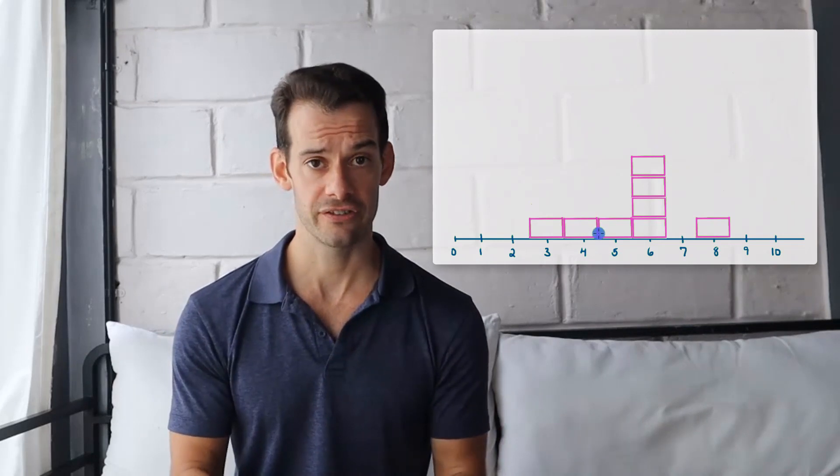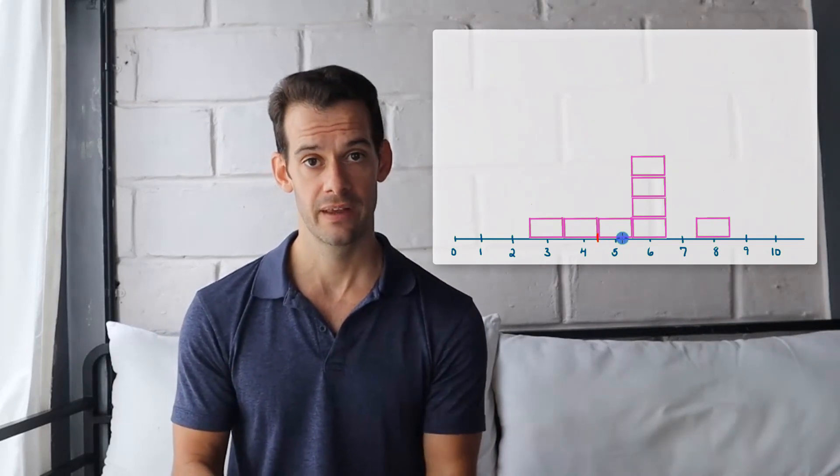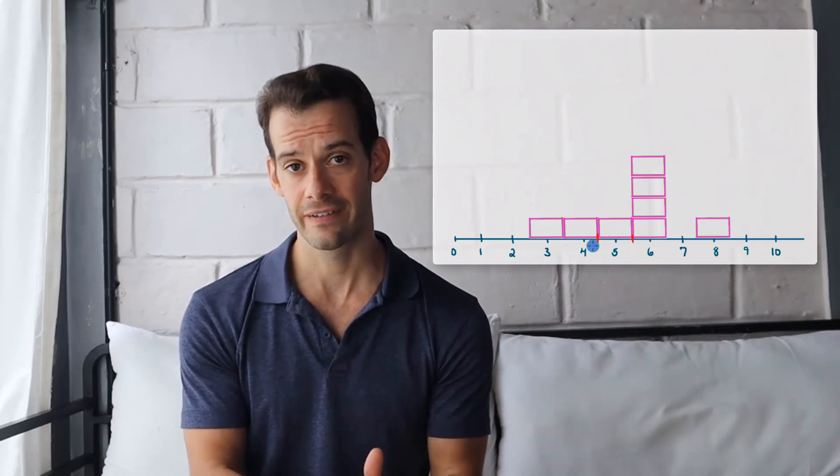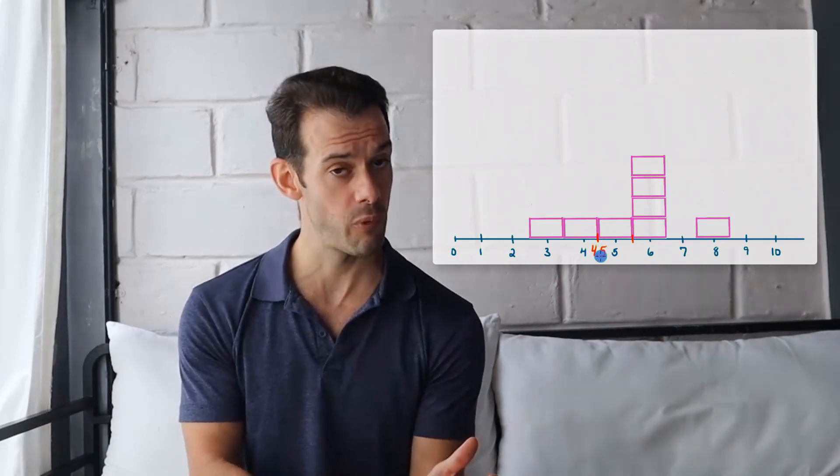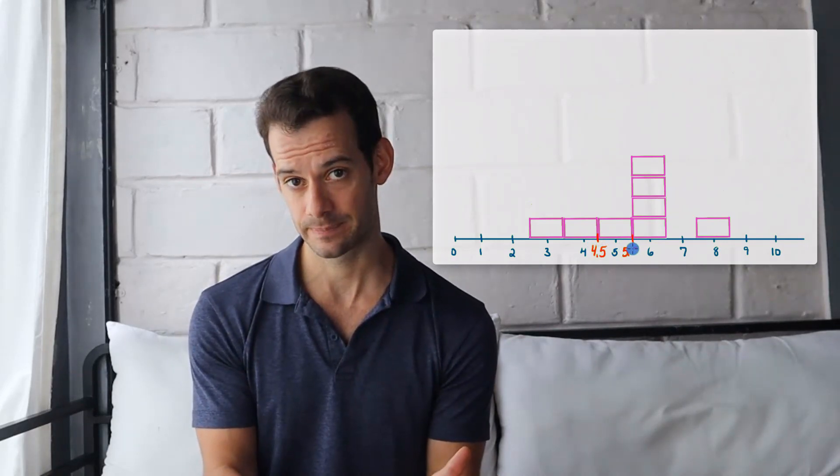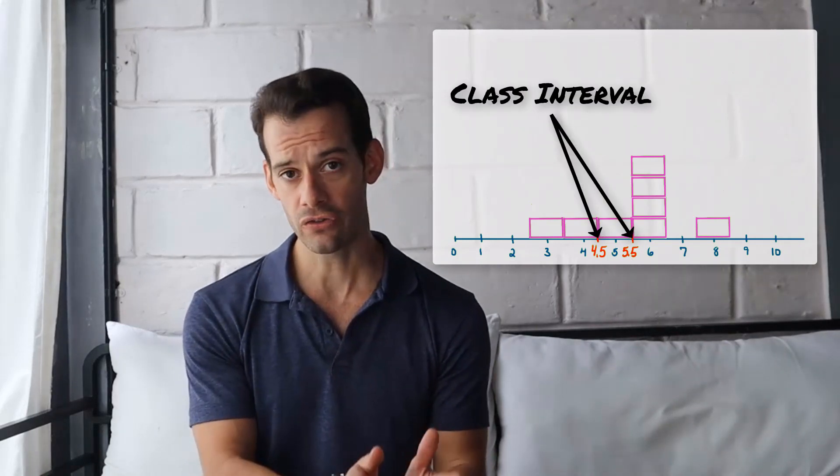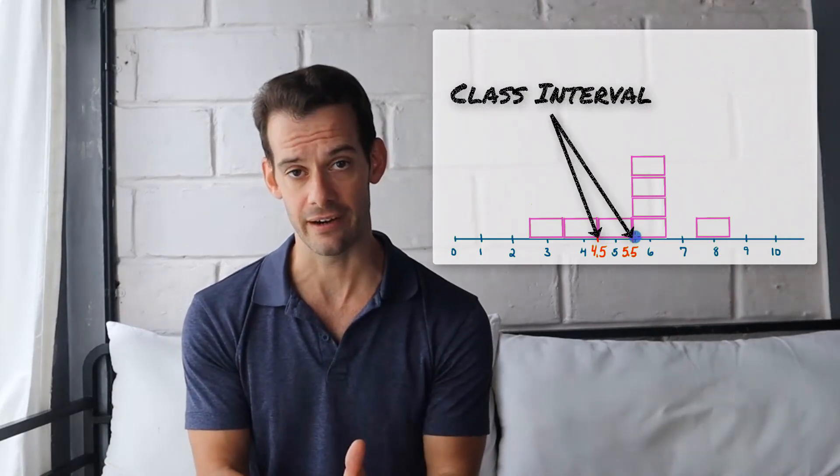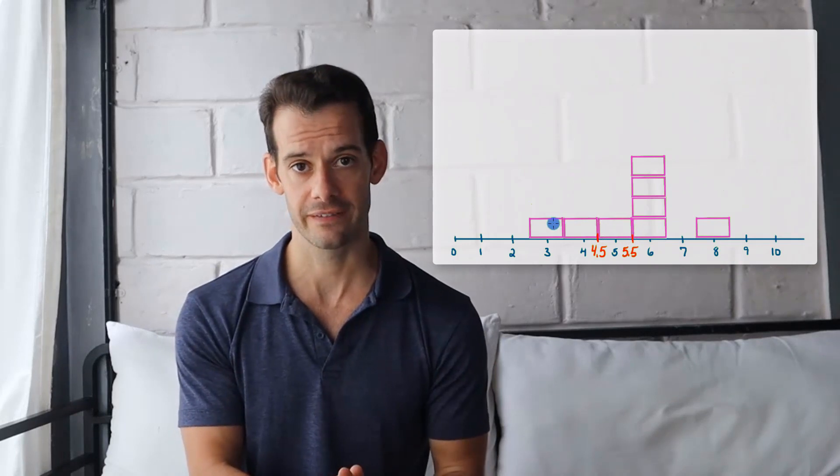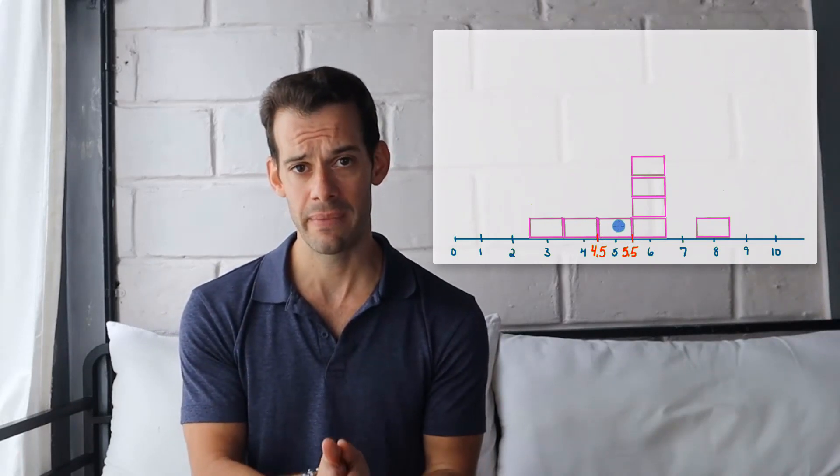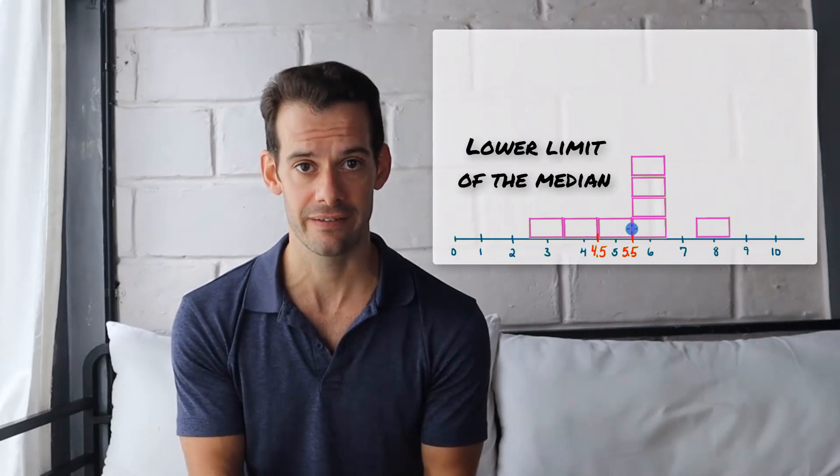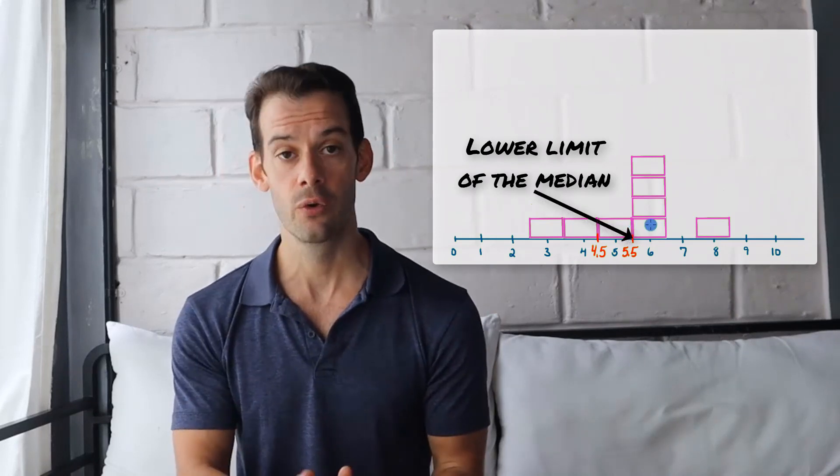First we need to recognize that our scores are in whole seconds. That means that a score of 5 technically could be anywhere from 4.5 up to 5.5. This is called the class interval. And we can also see that if we go to 5.5 here we have 3 boxes to the left. That tells us that our median must be at least 5.5. But if we go all the way to 6 we've gone too far.